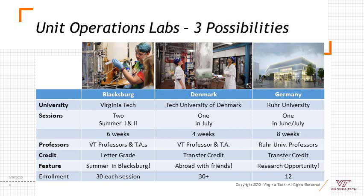Unit operations laboratory has three possibilities. Students can take the experience in Blacksburg during the summer of their junior year — a six-week experience where they earn a letter grade, spend their summer in Blacksburg, and there are about 30 students in each section. Students can also apply to take unit operations laboratory in Denmark. We have one session in July, a four-week session, with a Virginia Tech professor and teaching assistant that travel along with them. It offers transfer credit, and typically about 30 or more students exercise this opportunity.